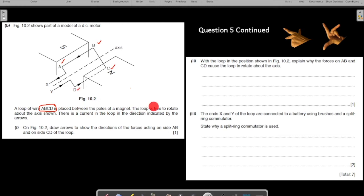The loop is free to rotate about the axis shown. So, the loop is free to rotate. There is a current in the loop in the direction indicated by the arrows. So, let us find out where are the arrows. You can identify the arrows. These arrows give you the direction of the current. The current is flowing all the way from Y moving through the loop as my pointer is moving and it is exiting from X.